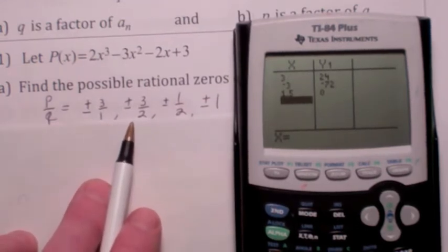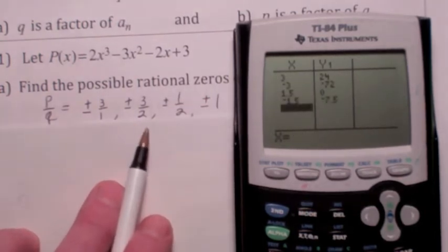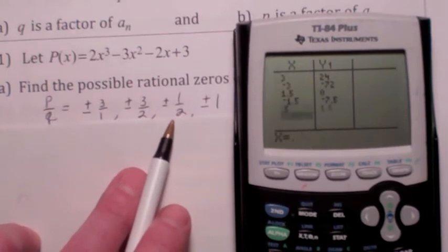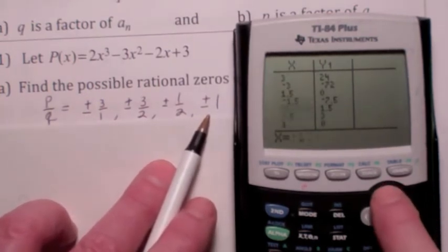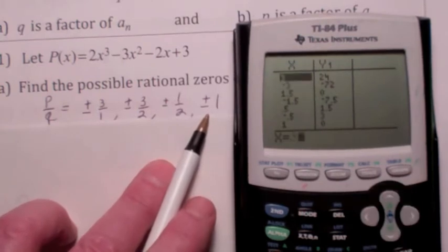So x minus 3 halves would be a factor. How about negative 1.5? Nope. How about 1 half? 0.5. Nope. How about negative 0.5? Oh, got another one. I got 2 so far. How about negative 1? There you go. I got 3 of them.